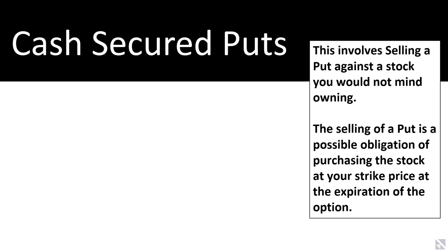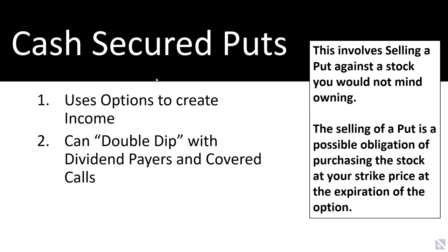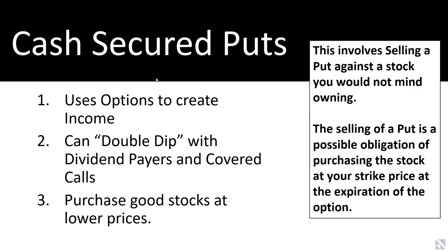Now let's talk about cash secured puts. A cash secured put involves selling a put against a stock you would not mind owning. When you sell a put, it's the possible obligation of purchasing the stock at your strike price at the expiration of the option. Good things about cash secured puts: they create high yield income using options, they can lead to a double-dip with dividend payers and covered calls, and they allow you to purchase good stocks at potentially lower prices.